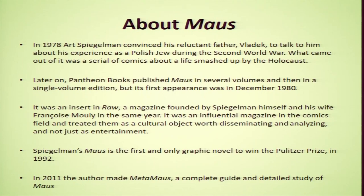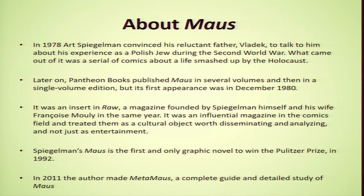In 1978, Art Spiegelman convinced his reluctant father Vladek to talk to him about his experience as a Polish Jew during the Second World War. What came out of it was a serial of comics about a life smashed up by the Holocaust. After nearly 40 years, Spiegelman's Maus confirms itself to be a post-modern analysis of World War II. Pantheon Books published Maus in general volumes and then a single volume edition, but its first appearance was in December 1980 as an insert in Raw, a magazine founded by Spiegelman himself and his wife Françoise Mouly in the same year. It was an influential magazine in the comic field and treated comics as a cultural object worth disseminating and analysing, not just as entertainment. Spiegelman's Maus is the first and widely acclaimed graphic novel to win the Pulitzer Prize in 1992.